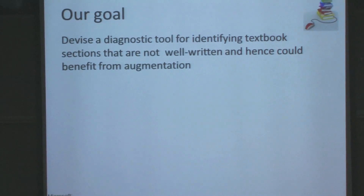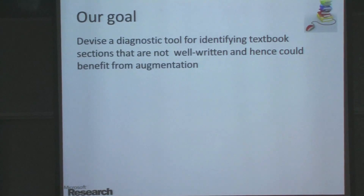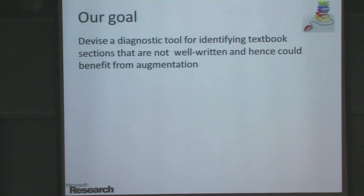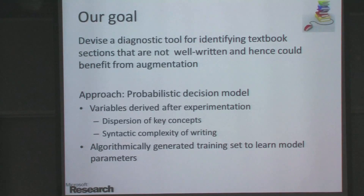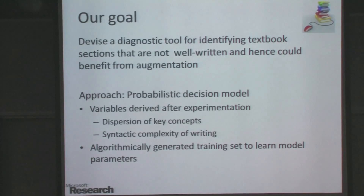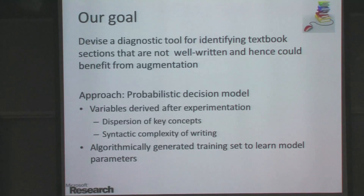In this talk, I will focus mostly on the first part: how do we identify sections that are not written well. Our goal is to create a diagnostic tool that can help either the authors or experts identify sections. We don't want to replace authors or experts, but to help them with a tool. We use a probabilistic model, and after experimenting with different variables, we narrowed down to two classes: dispersion and syntactic complexity. It's very hard to obtain high-quality judgments for learning parameters, so we also show a way to automatically generate training data.